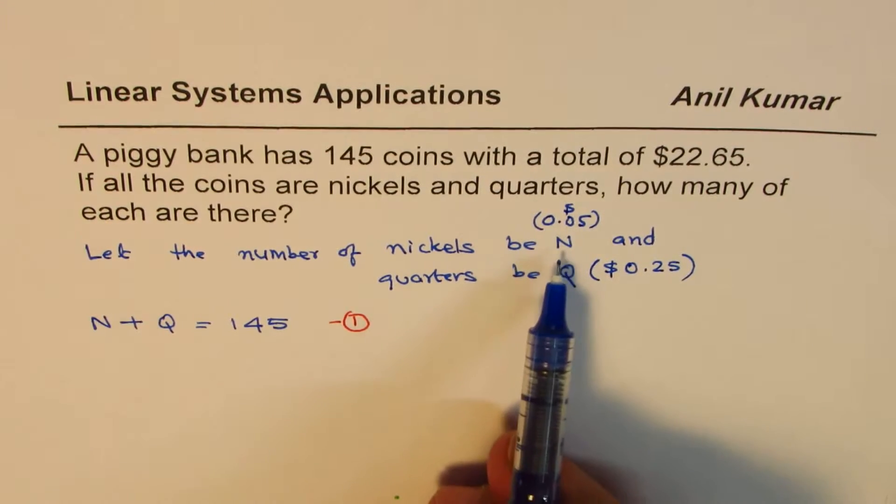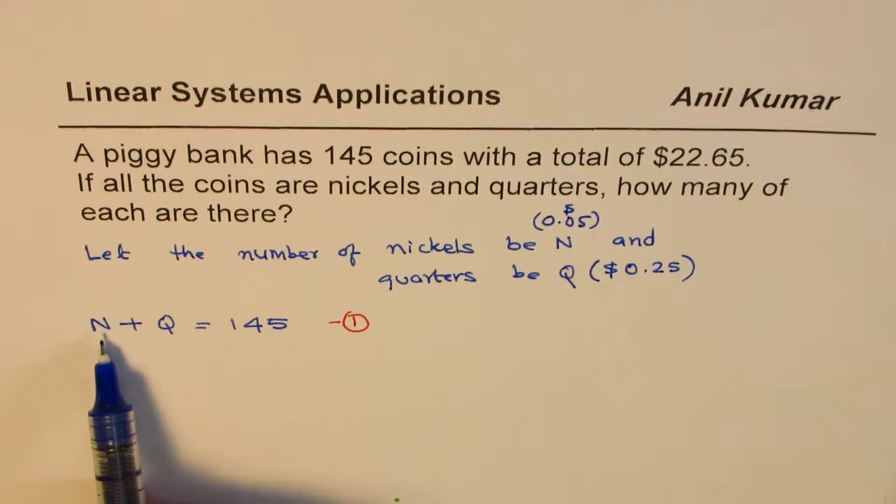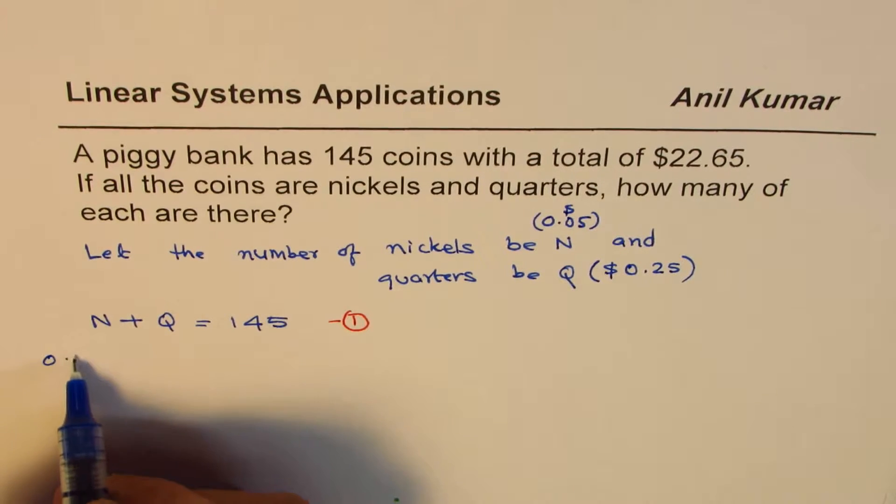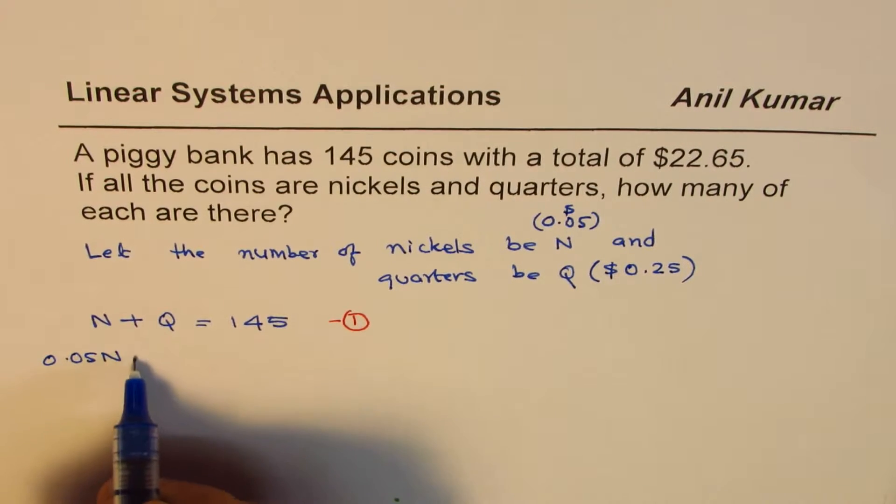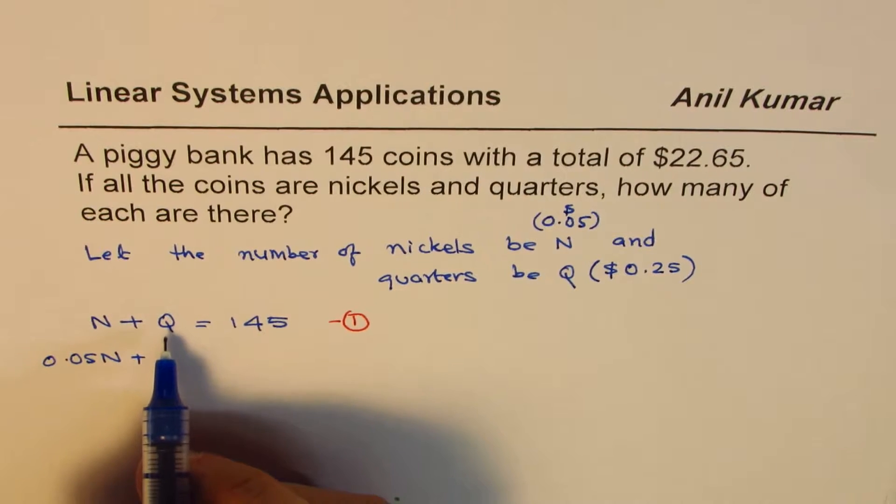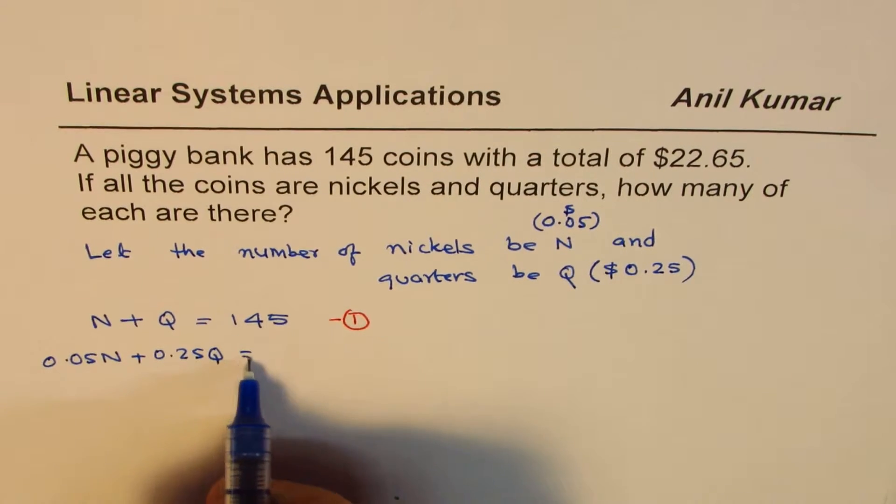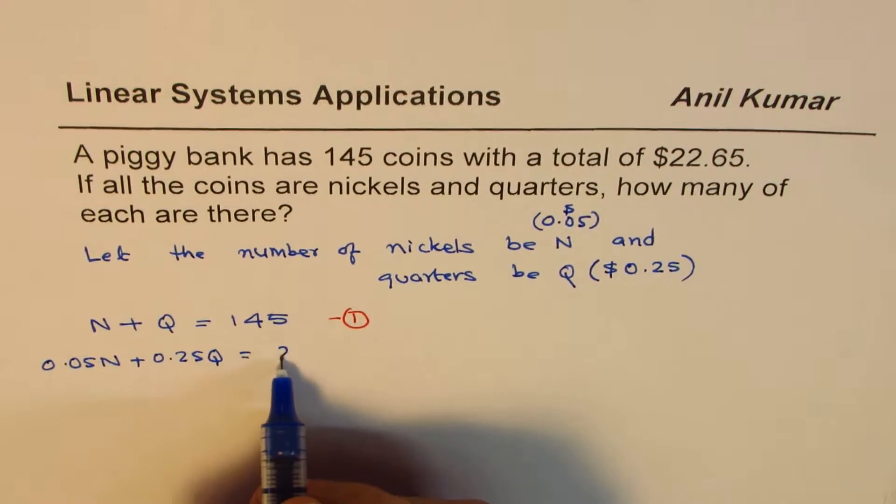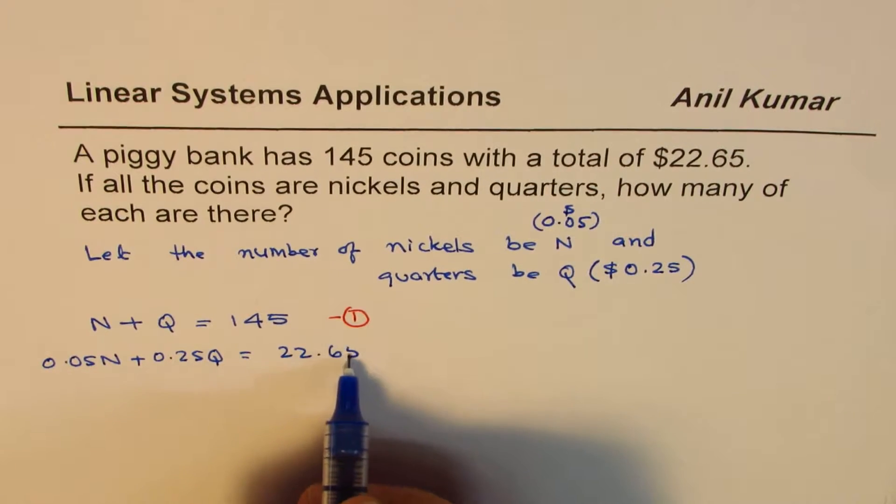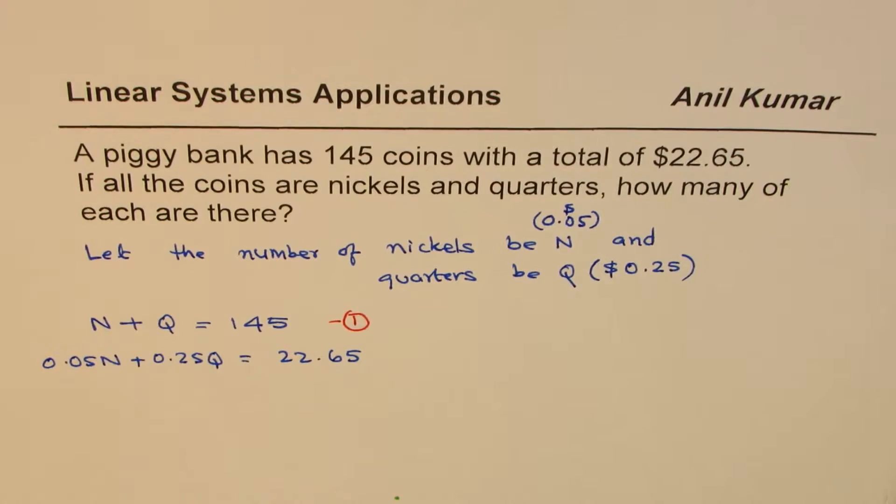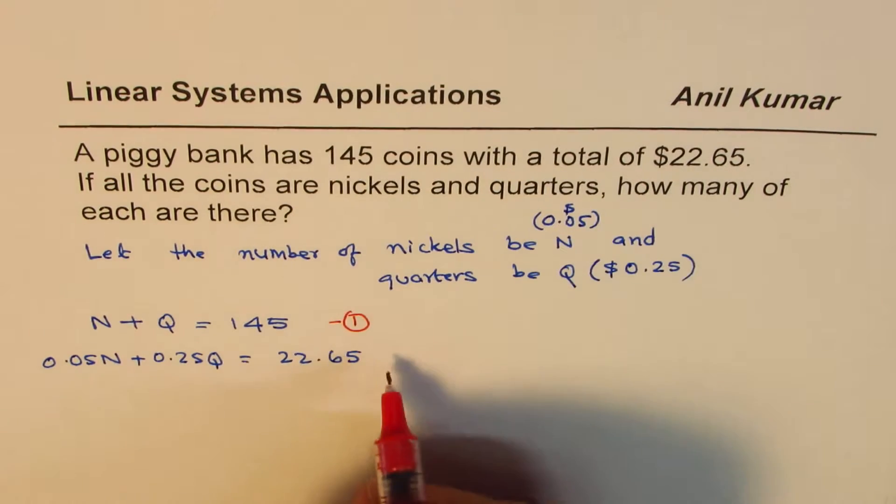So the value of N nickels is going to be 0.05N. The value of Q quarters will be 0.25Q. And the total value is given to us as 22.65. Do you see that? So we get the second equation using the second part of the first statement.